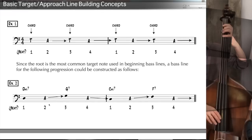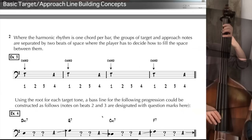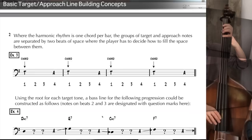Example 2 shows that since the root is the most common target note in beginning bass lines, a bass line for the progression D minor, G7, C minor, F7 would have D on beat 1, G on beat 3, C on beat 1, F on beat 3, with an approach note leading to each of those notes on beats 2 and 4 directly before they happen. Where the harmonic rhythm is one chord per bar, groups of target and approach notes are separated by two beats of space, leaving beats 2 and 3 open for interpretation, as shown in example 3.